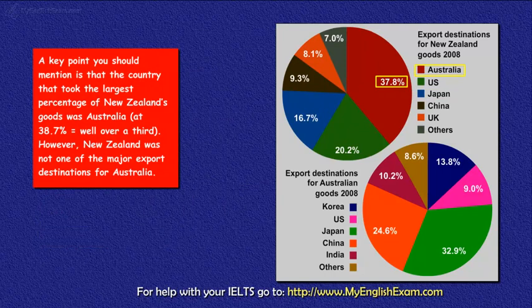A key point you should mention is that the country that took the largest percentage of New Zealand's goods was Australia, at 38.7% — well over a third. However, New Zealand was not one of the major export destinations for Australia.